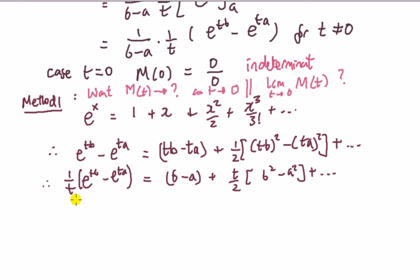So, now I can see that having written this down, I can see that the limit as t tends to zero of this function is 1 over b minus a